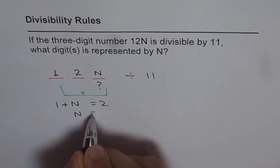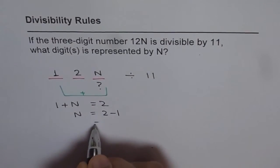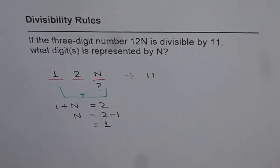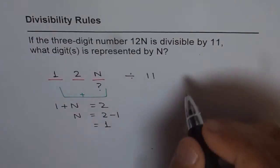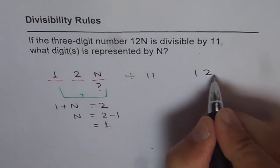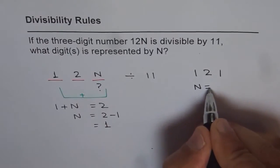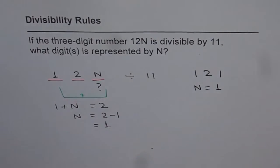From here, N equals 2 minus 1, or N equals 1. And therefore, we get our number as 121, or N equals 1. That is our answer.